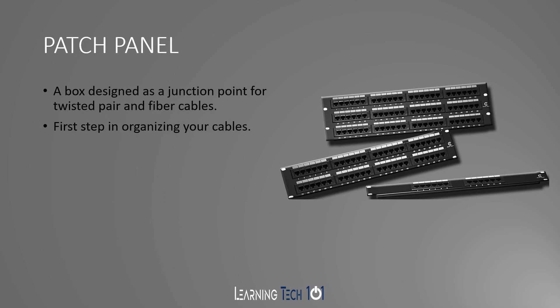Our next device is the patch panel. This is a box designed as a junction point for twisted pair and fiber cables — it's the first step in organizing your cables in an office or building. Patch panels are located in telecom closets or data centers, and all the cables from your Ethernet jacks in the walls throughout the building run through the wall and connect into that telecom closet or data center, connecting to the back of these patch panels. From there, you're able to connect to whatever networking equipment you have in that area.